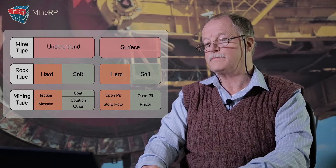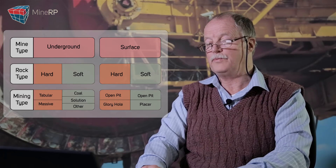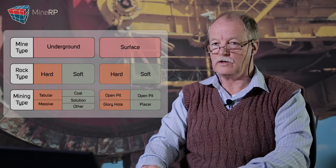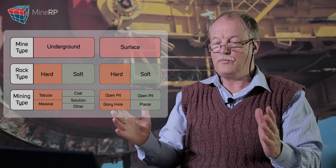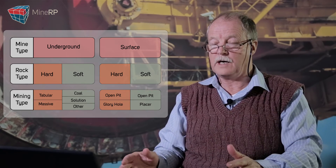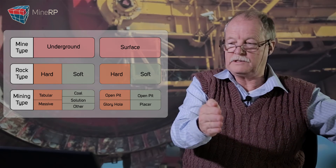If we look at surface mines — hard rock — we have open pit. We also have open pit for soft rock. The difference is: in an open pit mine for hard rock, the more I mine, the wider and deeper the hole gets. If I'm in soft rock, typically a coal seam, I make a hole and move the hole across the countryside.